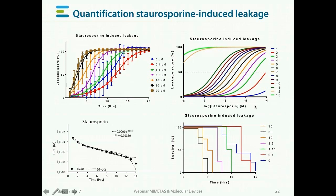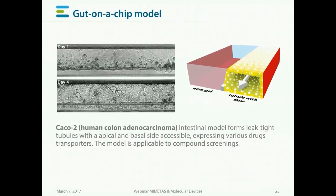We can depict the concentration of staurosporin over the leakage score, or calculate an EC50 curve. We can also create a Kaplan-Meier-style curve scoring the survival of the leak-tight tubules, giving a very nice insight into the effects of compounds at different concentrations. Tubular models are also possible with a gut-on-a-chip — here we see a phase contrast image of a Caco-2 tubule, a human colon adenocarcinoma cell line, forming very nice leak-tight tubules inside organoplates, which can be used to assess effects of compounds, growth factors, or inflammatory factors on leak-tightness.